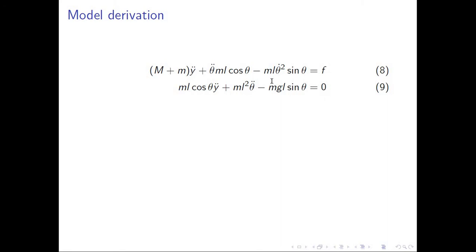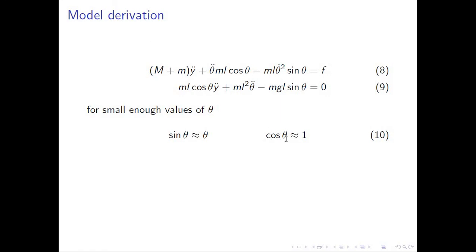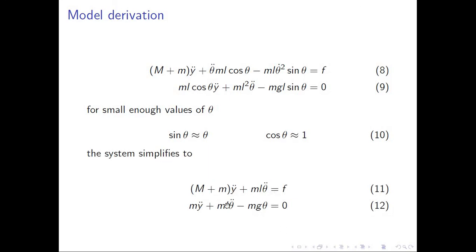In the next video I will use the nonlinear model, but for now I will linearize it using the small-angle approximation: for small enough angles, sine of theta ≈ theta, and cosine of theta ≈ 1. Using this approximation, equation 8 becomes equation 11, and equation 9 becomes equation 12. So now we have both the nonlinear model and the linear model, and we will have two sets of videos — one for each.